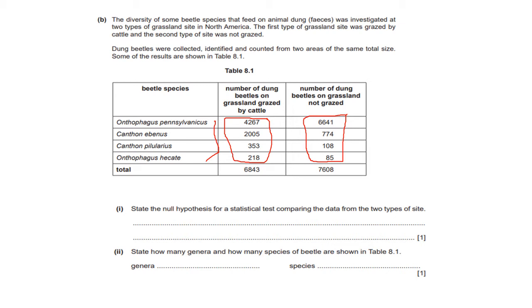So the first question says state the null hypothesis for a statistical test comparing the data from the two types of site. I just want to rehash this. I don't know if I've said it before on previous videos that when you're calculating any statistical test and you're told to state the null hypothesis, the null hypothesis is always that there is no significant difference between the two data sets. So in this case it would be there is no significant difference between the dung beetles on grazed land versus ungrazed land. The null hypothesis is not an opinion. So it's not something you come up with by looking at the values in each table and then saying there is more of this on this land or less of this. The null hypothesis is always that there is no significant difference between the two data sets that you are comparing.